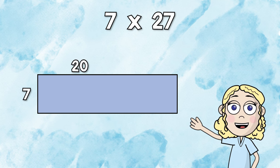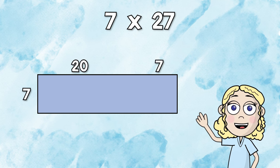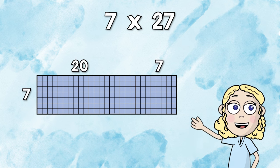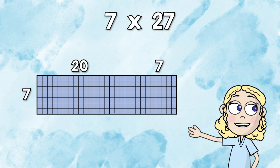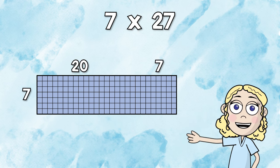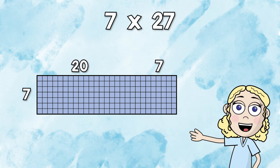20 for the tens place and then 7 for the ones place. Inside this rectangle, we're going to imagine that we have a grid of 7 rows and 27 columns. This can show you why we're going to break down this rectangle the way we are.